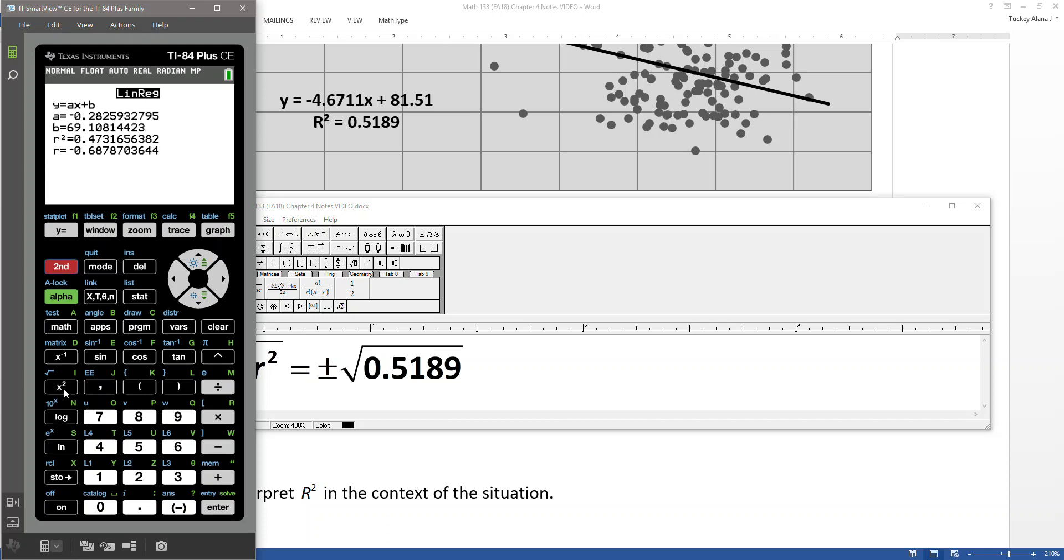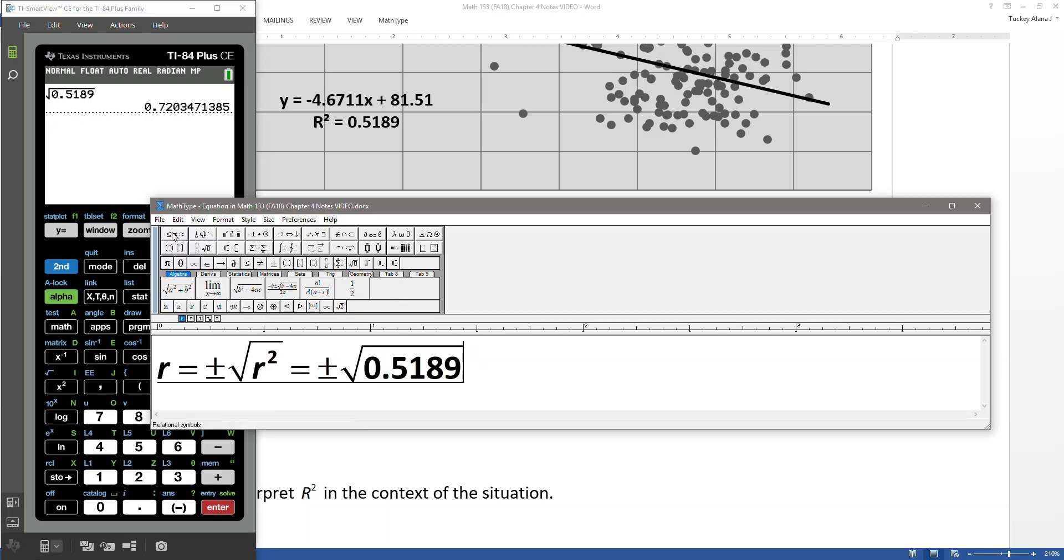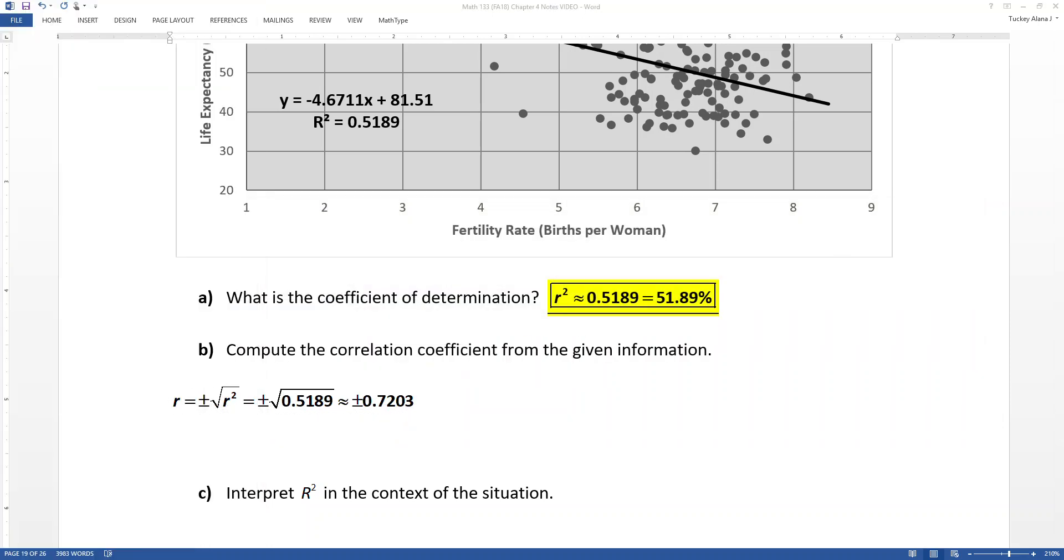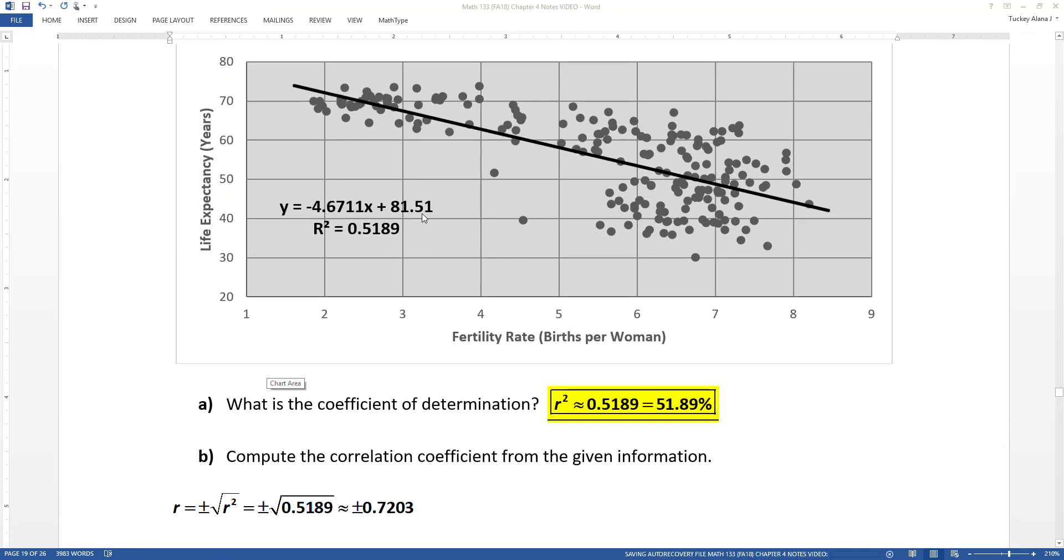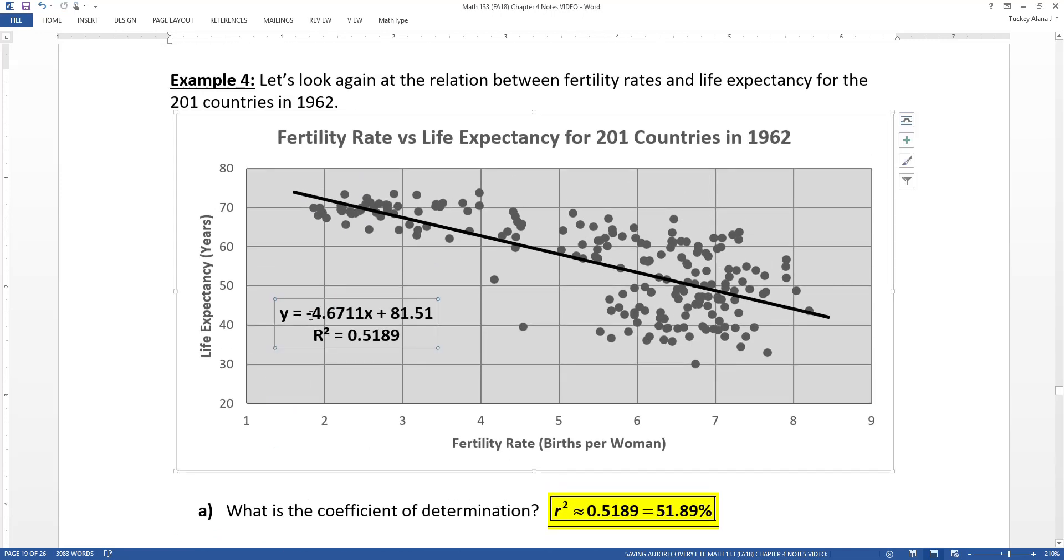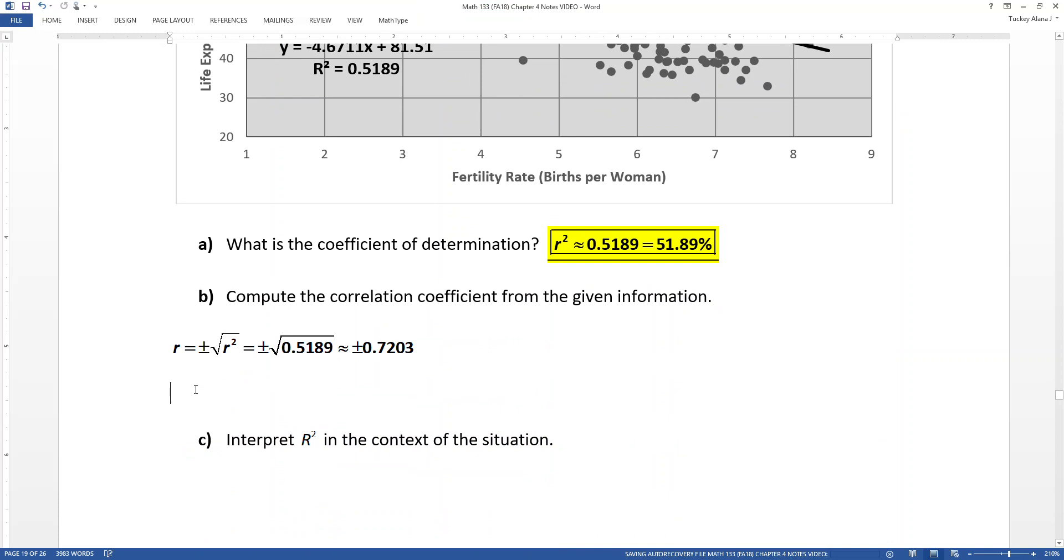So to take a square root, I hit second square root, which is above the X-squared button. And I type 0.5189. And I get 0.7203. So that is what my R is going to be. It's going to be either positive or negative 0.7203. It's not both of them. It's one or the other. So then I have to look at my data set and my scatter plot, or both, whichever one was given. Or another way to look at it is the slope. Do you see the slope is negative? That's a sign that the R is going to be negative. Or you can look at the graph and see that it's going to be negative. It's a negative relationship.